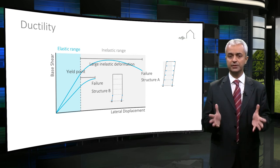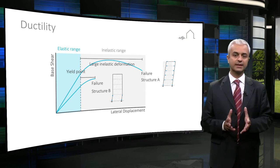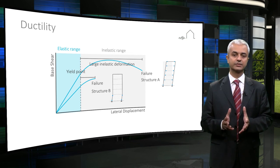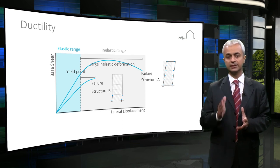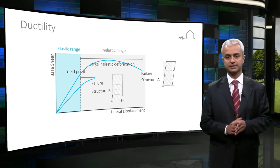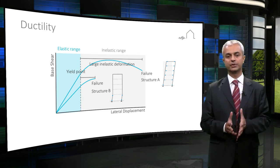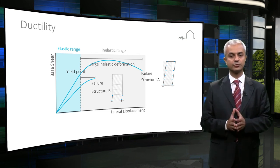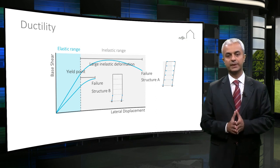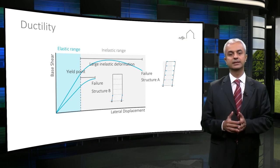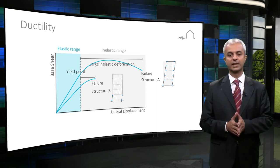In a frame structure, it is always anticipated to have plastic hinges occur at beam ends rather than column ends. Therefore, a strong column, weak beam concept should be followed. The design should ensure that the column capacities are higher than the beam capacities.